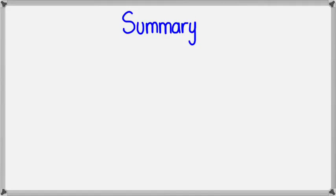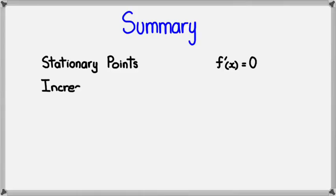So with that, guys, in summary, just having a look at all the things that we've looked at in this video so far. In summary, stationary points happen when f'(x) equals 0. Now, a function is said to be increasing when f'(x) is greater than 0.